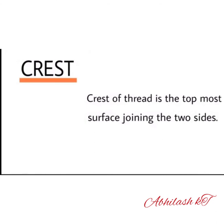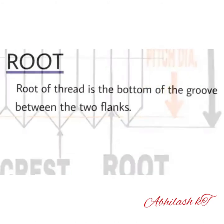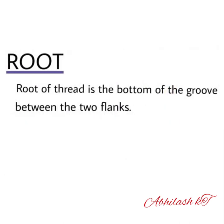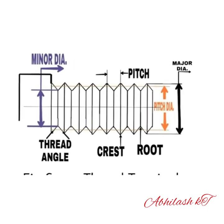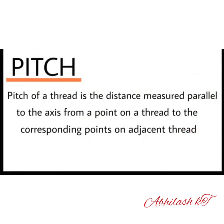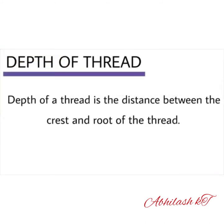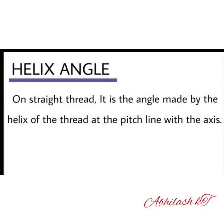Crest of a thread is the topmost surface joining two sides. Root of the thread is the bottom of the groove between the two flanks. Pitch of a thread is the distance measured parallel to the axis from a point on the thread to the corresponding point on adjacent threads. Flank of a thread are straight edges which connect the crest with the root of a thread. Depth of thread is the distance between the crest and root of the thread. Helix angle — on a straight thread, it is the angle made by the helix of the thread at the pitch line with the axis.